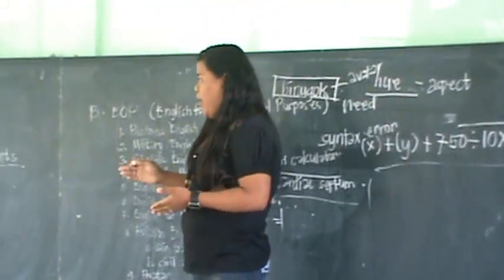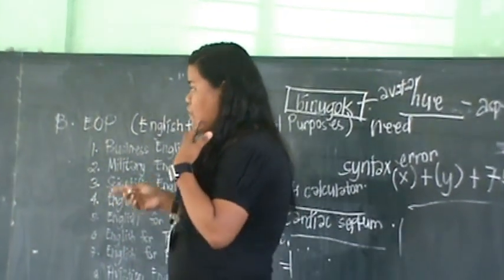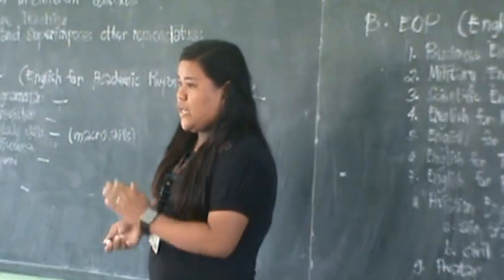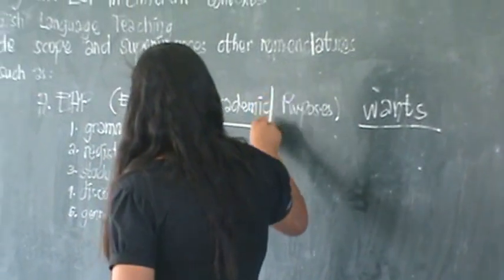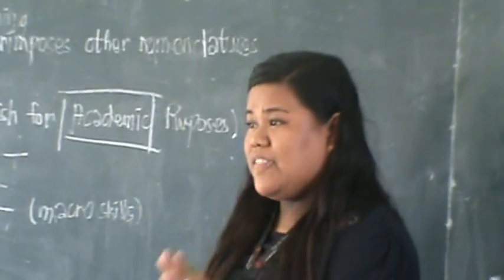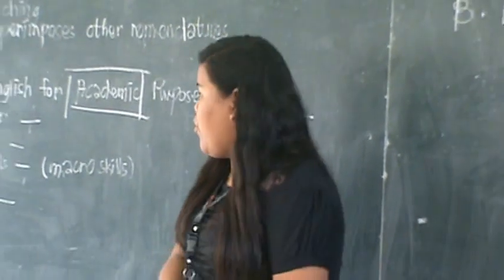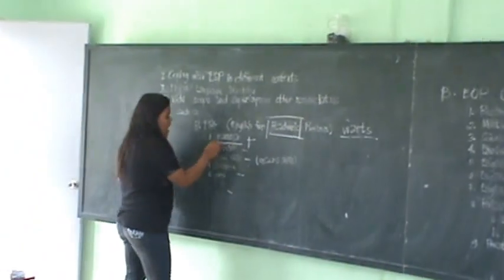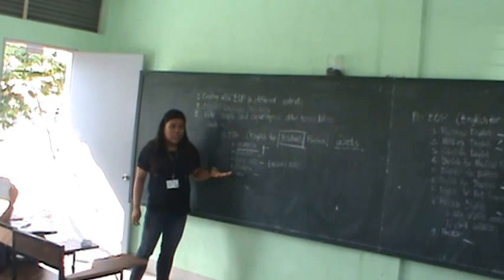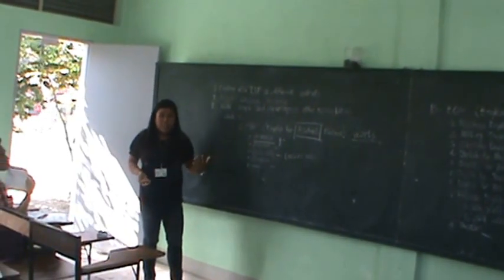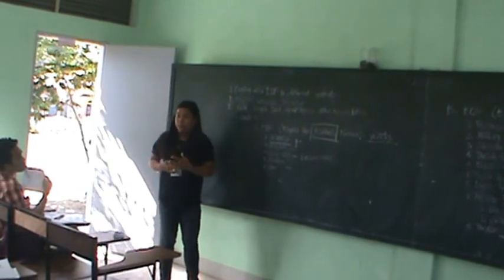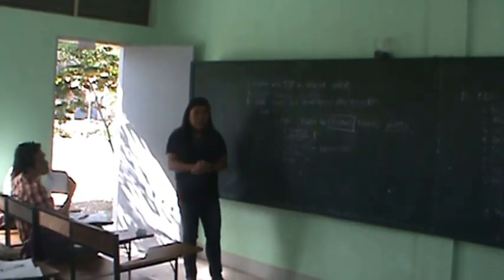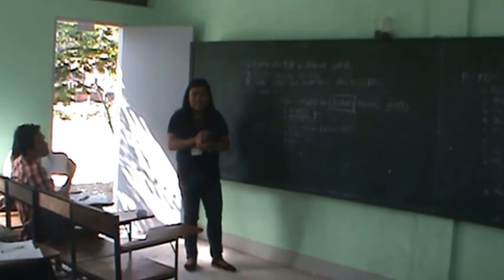Grammar is required. EAP consists of grammar because EAP is academic. Learning English includes a variety of components, and grammar is required in that learning. As we all know, improper construction of grammar can destroy the meaning — it can destruct what a sentence is really trying to convey.